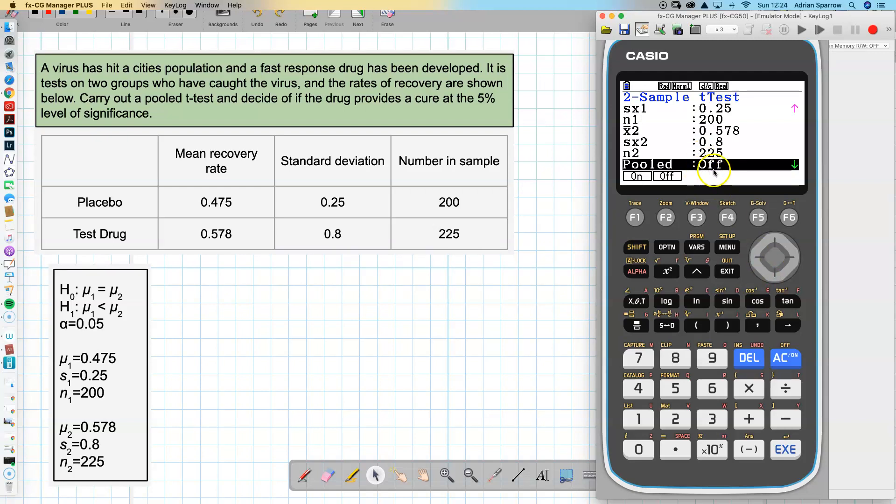I'm going to keep pooled as off. You will choose pooled on if the variances or the standard deviations are the same, so generally it's pooled off. I'm ready to go now.